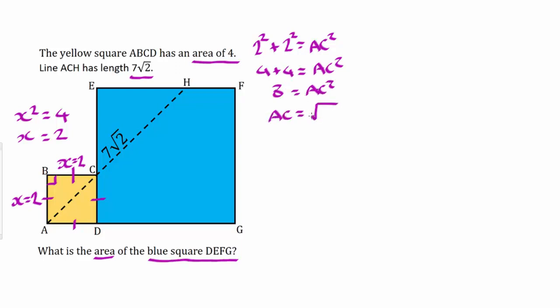So AC would be the square root of 8. So we have this length now, A to C is root 8. We also know that the length of A to H is 7 root 2. That means we can find the length from C to H because that will be the length of the longer line minus the length of root 8.